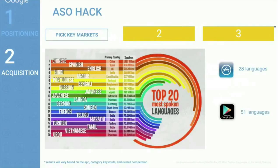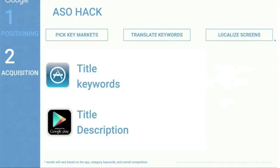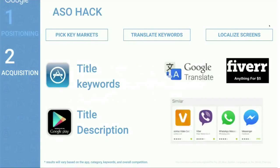To expand beyond local markets, start by picking key markets and top spoken languages: Arabic, English, Spanish, Portuguese, Mandarin. Translate your keywords into those languages and place them in the right fields: on iOS, put keywords in the title and keyword field; on Android, put them in the title and description. You can use Google Translate or Fiverr to get translations starting at five dollars.